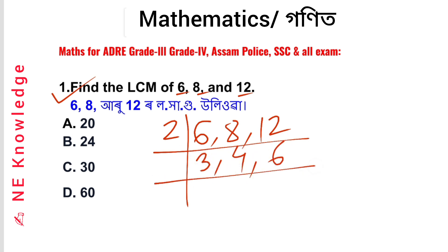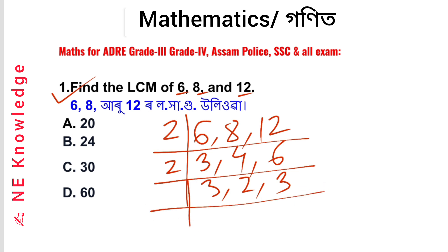Next, we have 2, 4, 8 and 2, 6, 12. Then 2, 4 and 2, 6, 12. Next, 2, 3 and 2, 4 and 2, 3, 6. Then 2, 3 and 2, 2, 2, and 3. Then 3, 1, 3 and 2, 2, 2, 2, 3, 1, 3.